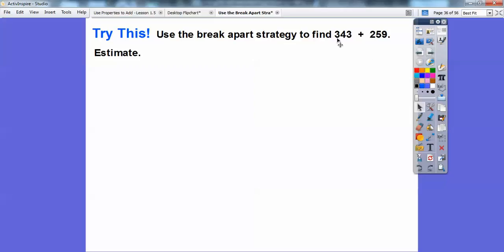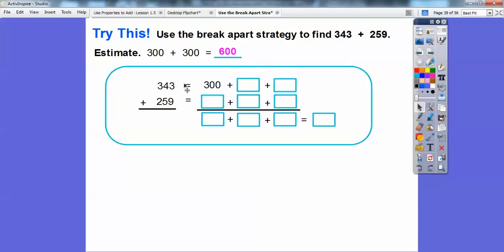Let's estimate. Is this closer to 300 or 400? Since that's 4, it's less than 5, we'll round this to 300. And since this is 5 or greater, we'll round this one to 300 also. So we're adding 300 plus 300, and our answer should be close to 600. Let's use the break apart strategy. 300 plus 40 plus 3, and 200 plus 50 plus 9. We'll add 300 plus 200 to get 500. We'll add 40 plus 50, that's 90. And then we get 12.